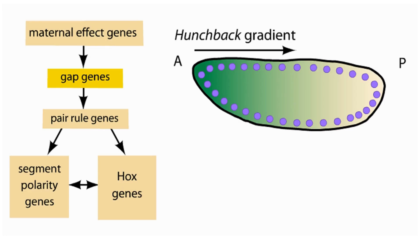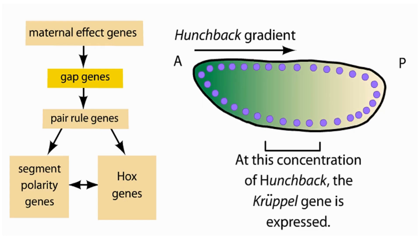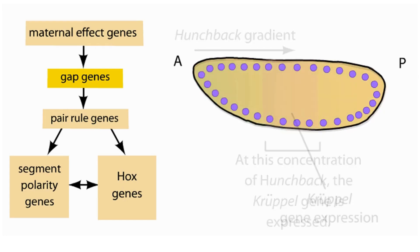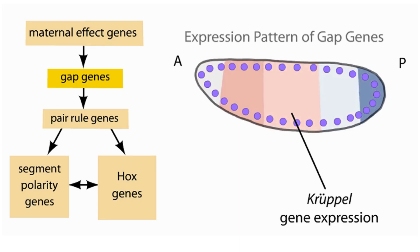Around this time in fly development, the embryo's nuclei have migrated. The hunchback protein is a transcription factor that turns on other gap genes in a concentration-dependent manner. For example, at mid-range concentrations of the hunchback protein, a gap gene called Krüppel becomes expressed. In addition to Krüppel, a number of other gap genes become activated in the embryo, defining large areas along the embryo's anterior-posterior axis.